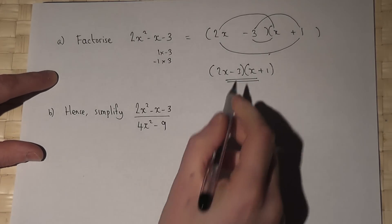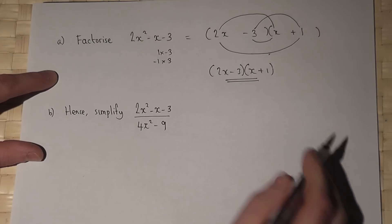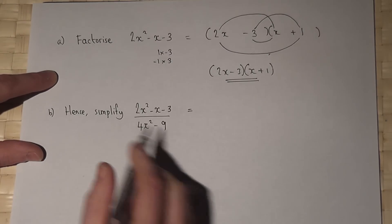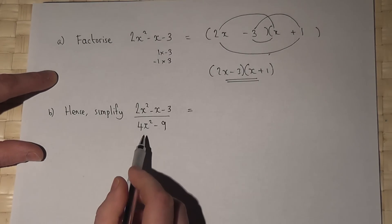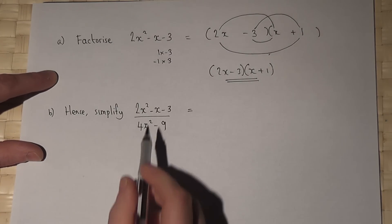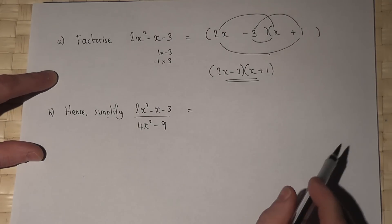Having factorized, I can then use this for the second part of the question. Because if you're asked to simplify an algebraic fraction, the method is to factorize the top and the bottom and see what cancels.